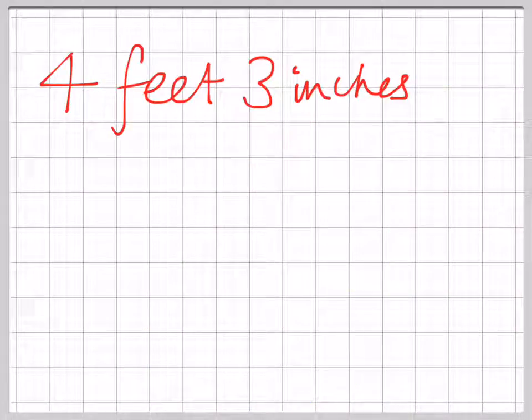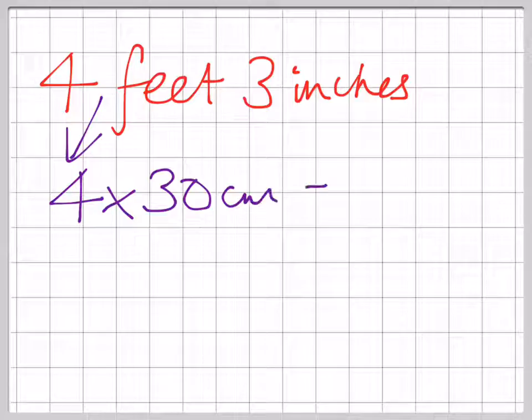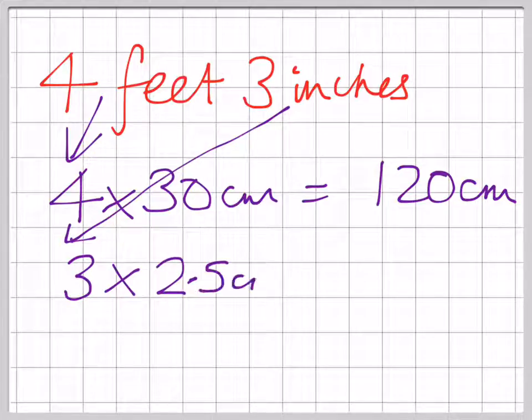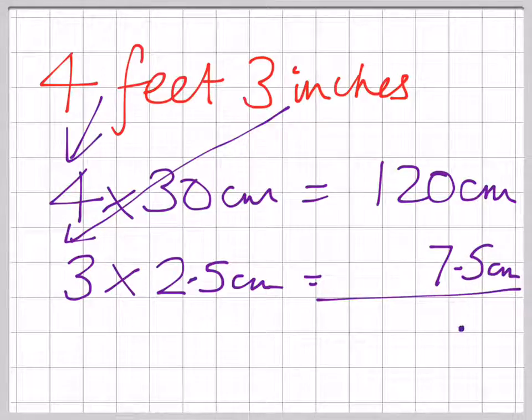Let's try Martha. Martha is 4 feet and 3 inches tall. So first of all, the feet. 4 times 30 centimeters would give us 120 centimeters. 3 inches, we would have 3 lots of 2.5 centimeters, which is 7.5 centimeters. Add those together. We get our 0.5 at the end and we get 127.5 centimeters.